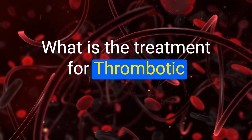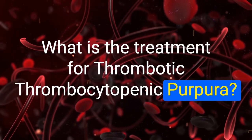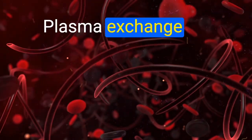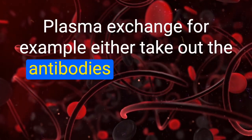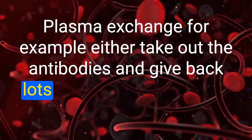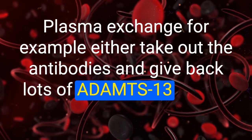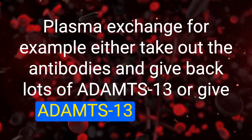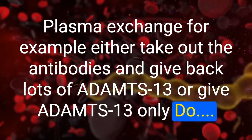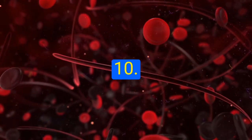What is the treatment for thrombotic thrombocytopenic purpura? Plasma exchange — either remove the antibodies and give back ADAMTS-13, or give ADAMTS-13 alone. Do not give platelets.